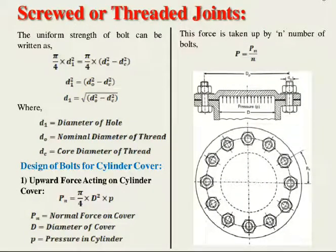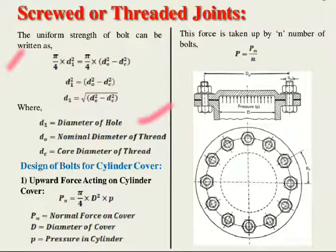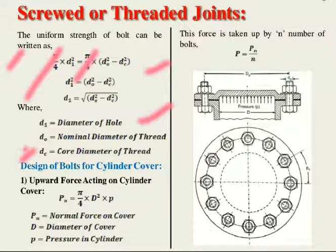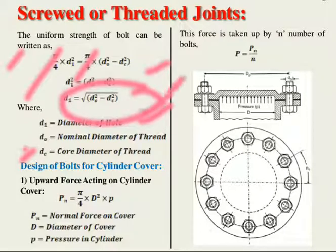Now, how do we derive the equation for the third case? The equation is: π/4 × d1² equals π/4 × (d0² − dc²), where d0 is the nominal diameter and dc is the core diameter of the thread. Solving this gives d1 = √(d0² − dc²). This formula gives us the diameter of the drilled hole.